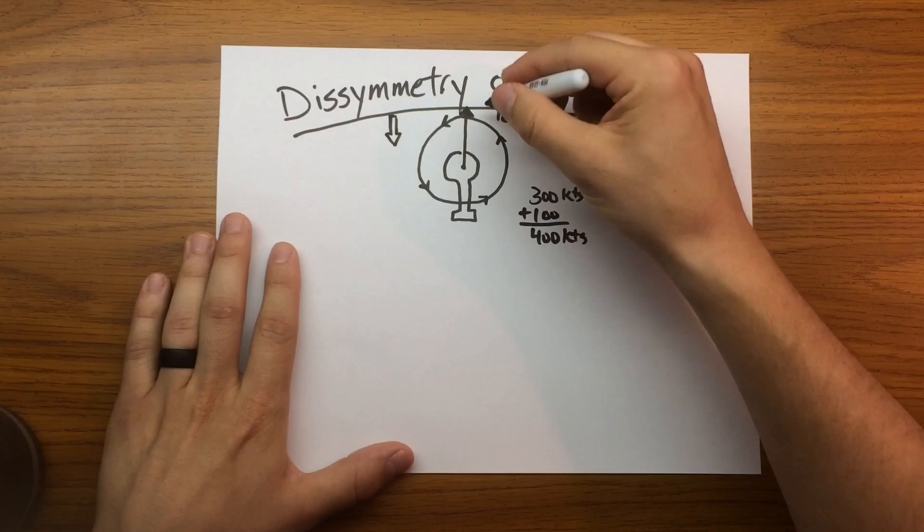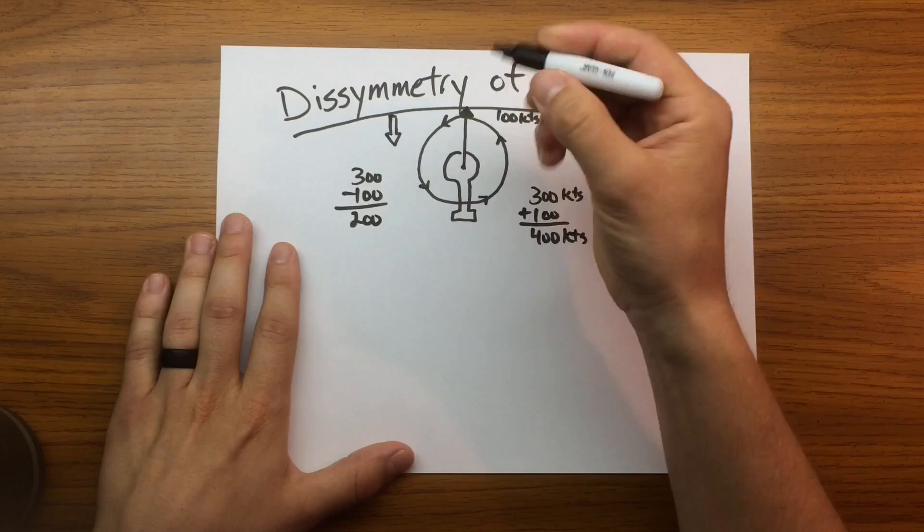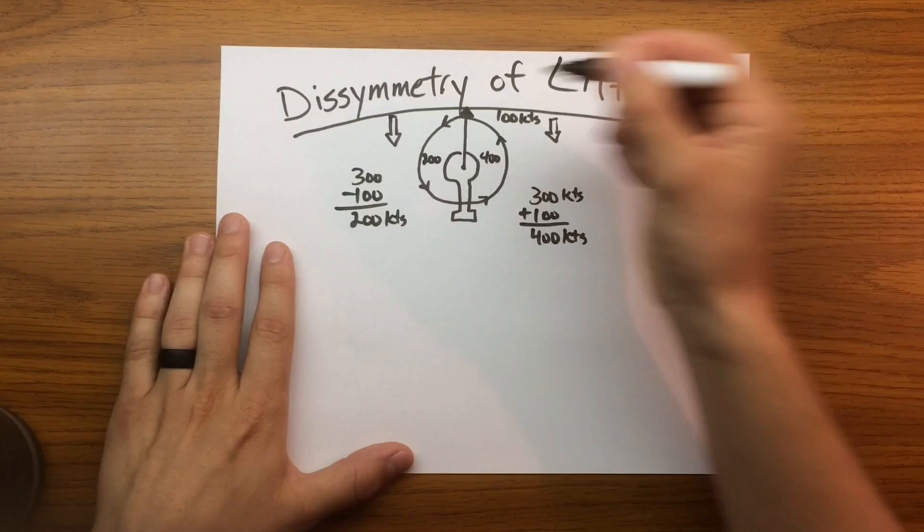Now, the retreating side, you have that same rotational velocity of 300 knots, but now it's retreating away from that relative wind. So it's losing that airspeed. So now you have 200 knots on the retreating side. So what does this mean? Well, your advancing side, the relative wind on the advancing side is 400 knots. The retreating side, 200 knots. So you're getting, in essence, double the lift on that advancing side than you are the retreating side.